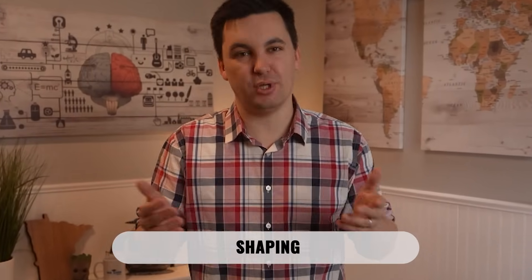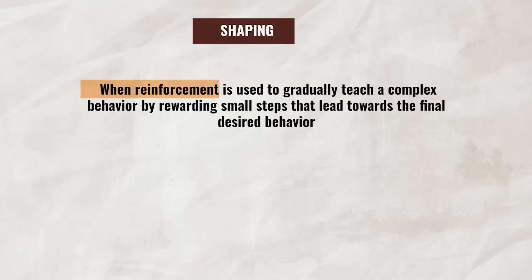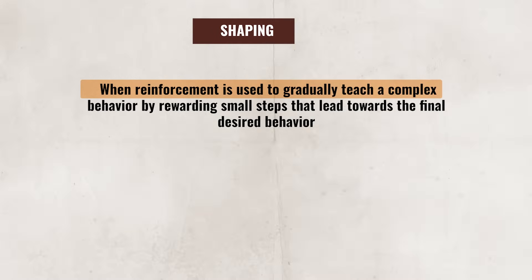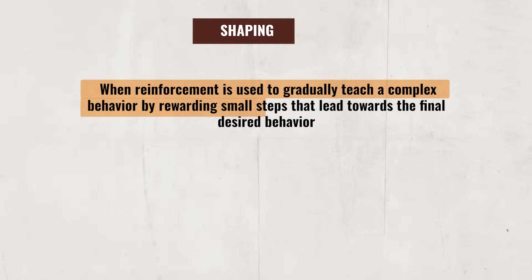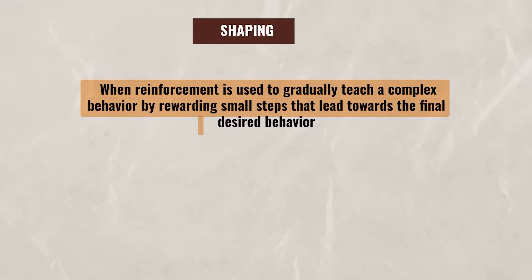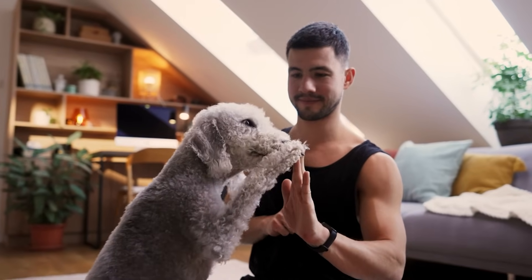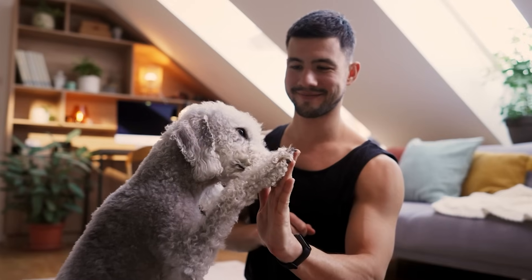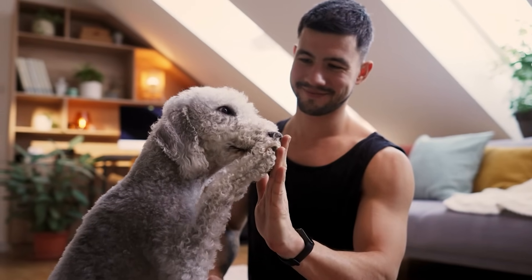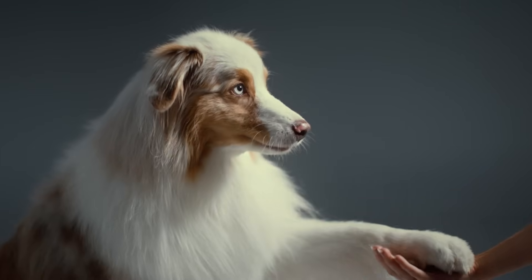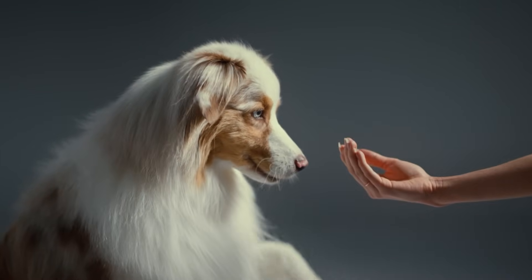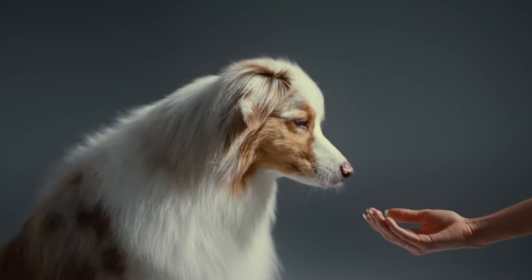When it comes to operant conditioning, it is common practice to use shaping. This is when reinforcement is used gradually to teach a complex behavior by rewarding small steps that lead towards the final desired behavior. Each time an individual or animal performs a behavior that's a little closer to the targeted behavior, they'll receive a reward. Over time, the reinforcements are given only for actions increasingly similar to the final goal. For example, we could look at the Skinner box, in which BF Skinner tried to get rats to push a lever to get food.